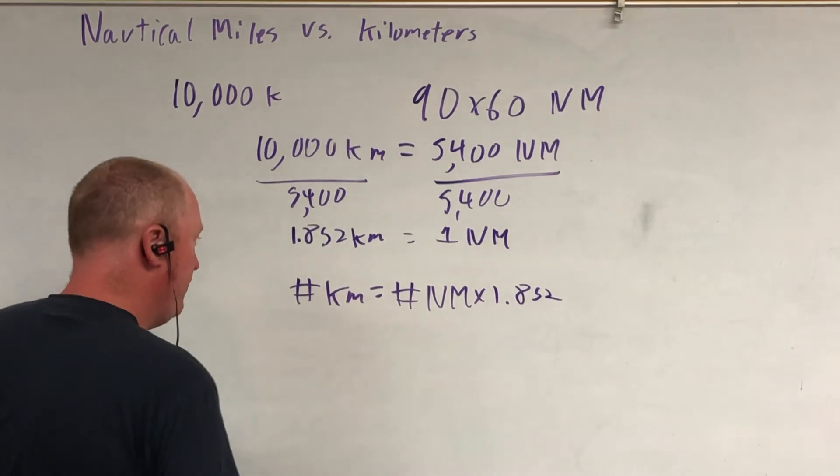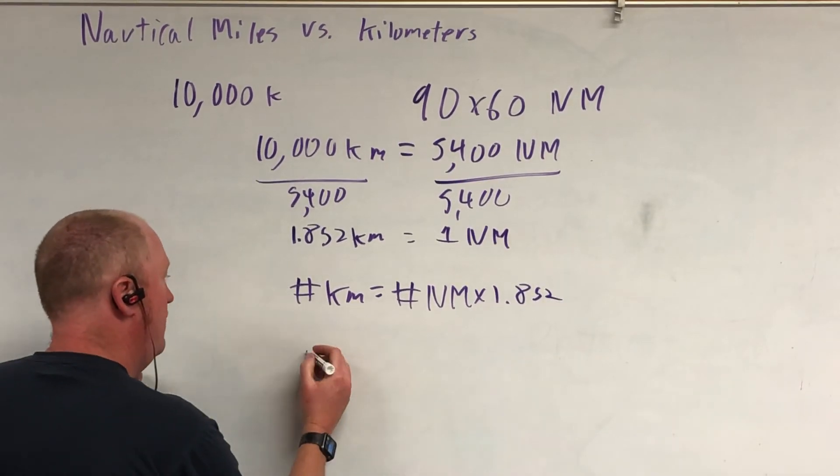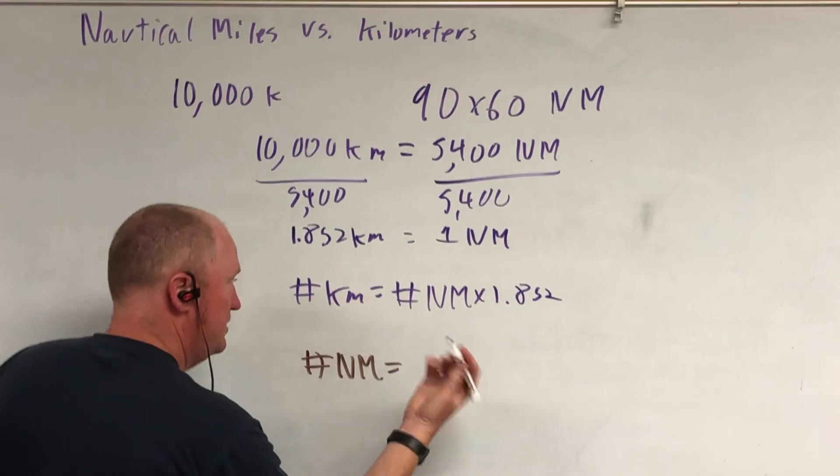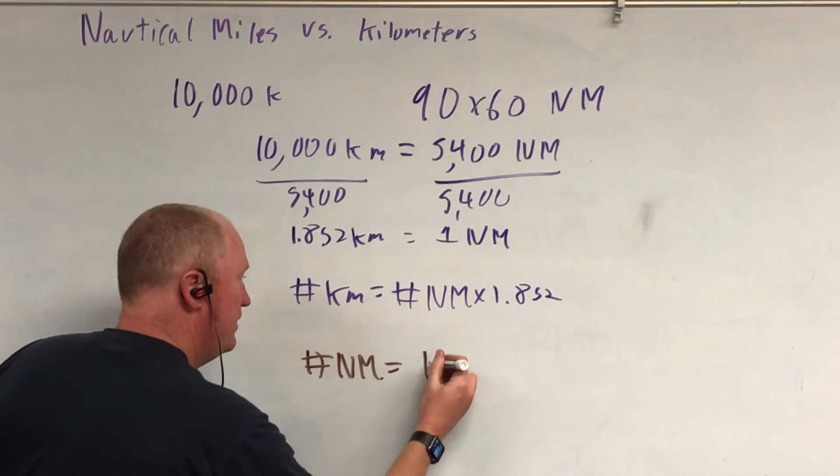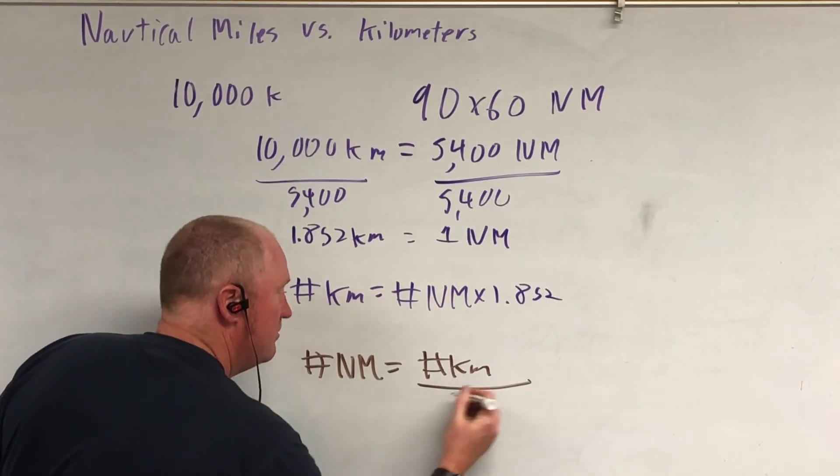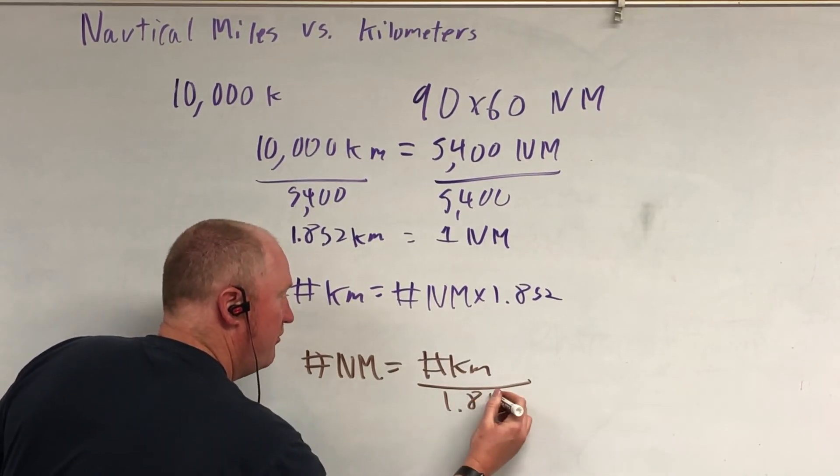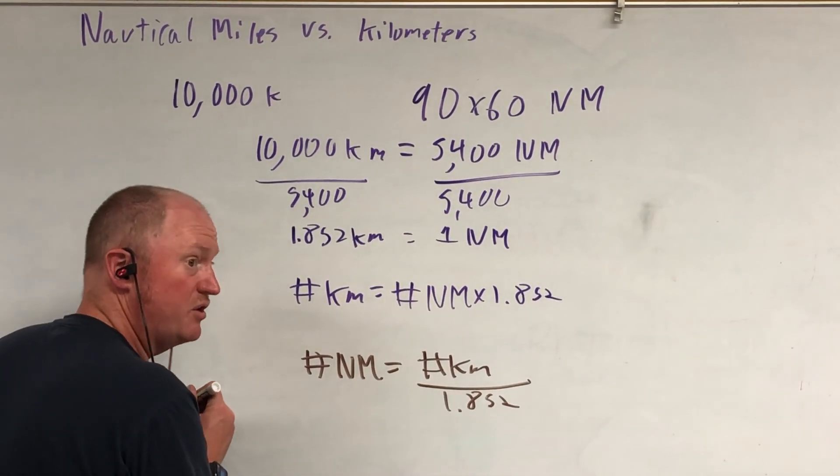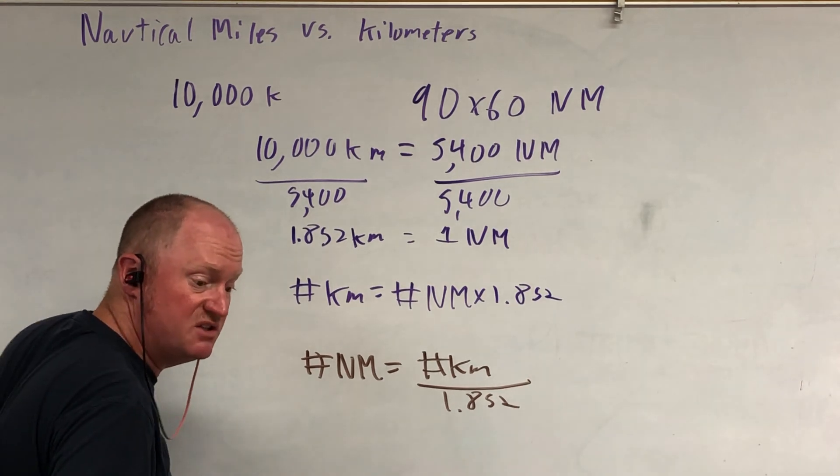If you want to go the other way, the number of nautical miles is equal to the number of kilometers divided by 1.852. Again, since the nautical mile is bigger than the kilometer, you're going to need less of them to go the same distance.